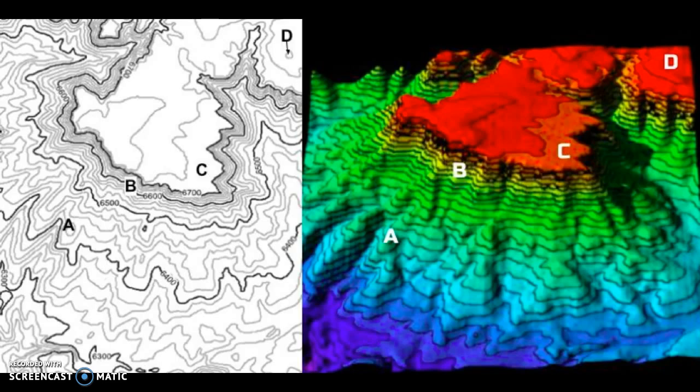Points C and D are at the top of the butte, with D being about 60 feet higher than C. However, point A would not be visible from point D because the butte at C blocks the view.